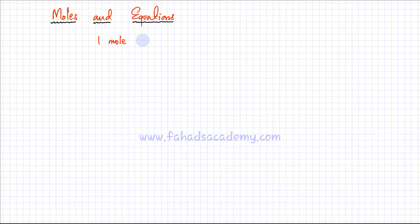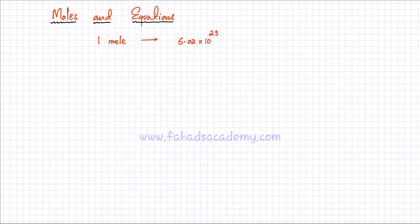If I have one mole of any particle, that would indicate that I have 6.02 × 10²³ particles, and that's a very large number — it's 6 followed by 23 zeros. Because in chemistry we have a lot of atoms, a lot of molecules, and a lot of ions, we need a very, very large unit for counting.